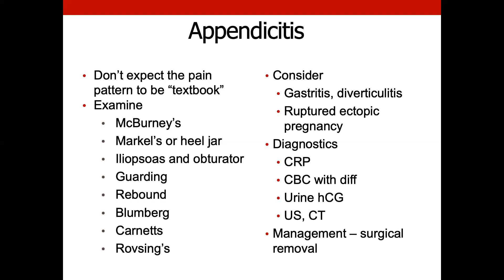If we're checking for appendicitis in a clinic setting with quick lab turnaround, we usually order a CBC with differential, CRP, and urine HCG. Why the urine HCG? To make sure they're not pregnant, because things like ectopic pregnancy or ruptured ectopic pregnancy can cause the same type of pain that appendicitis would and can mimic appendicitis. The ultimate solution is surgical removal — now done laparoscopically, which is quick surgery with typically no complications unless there are underlying issues we didn't know about.